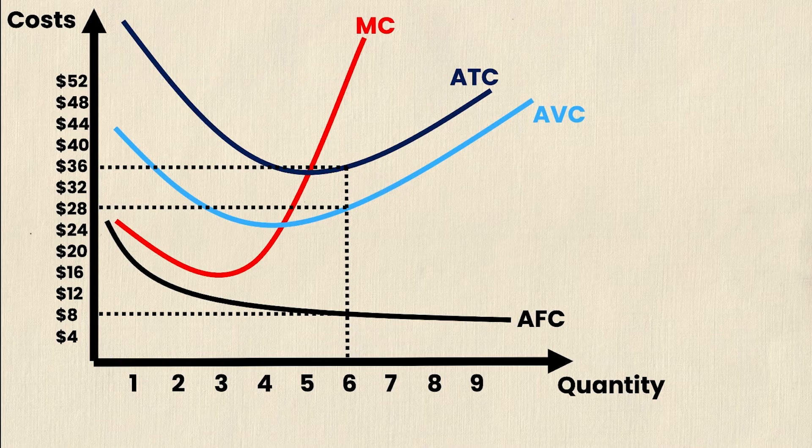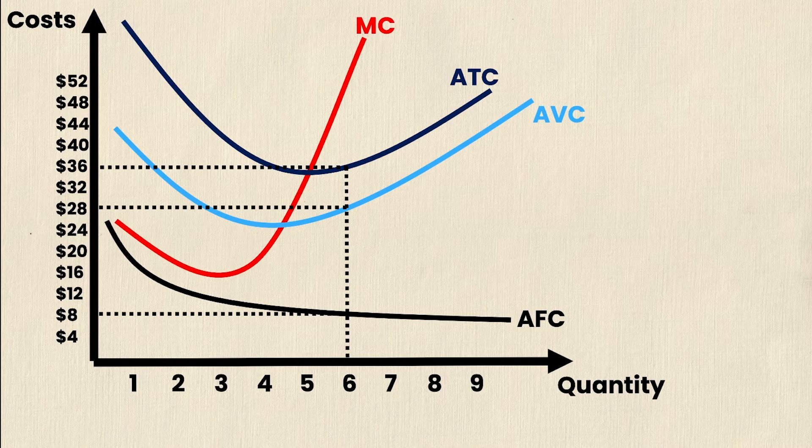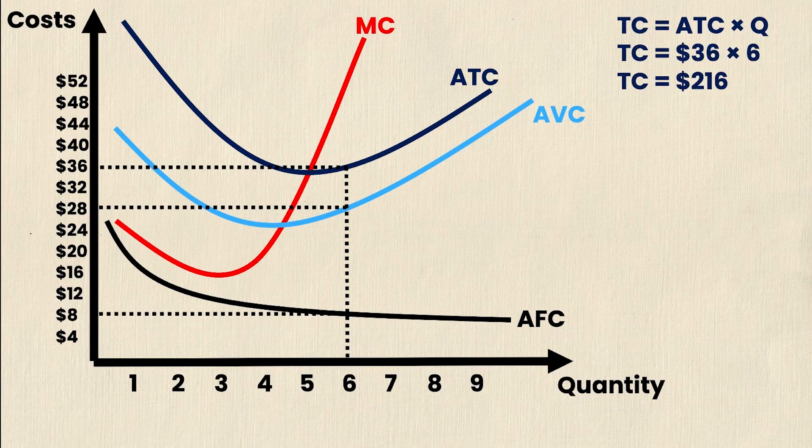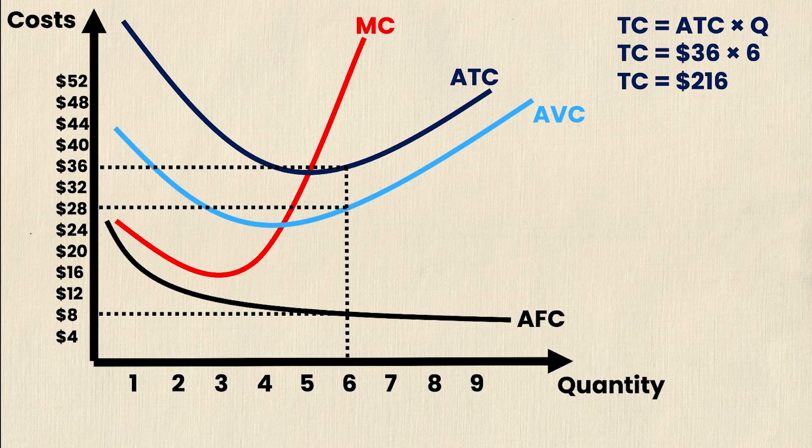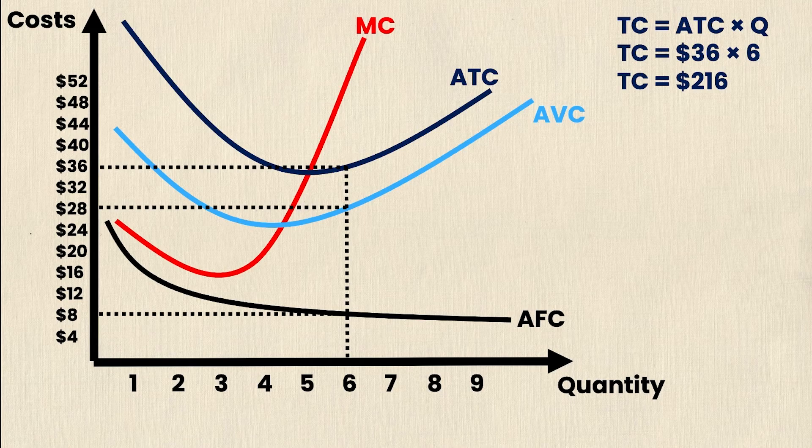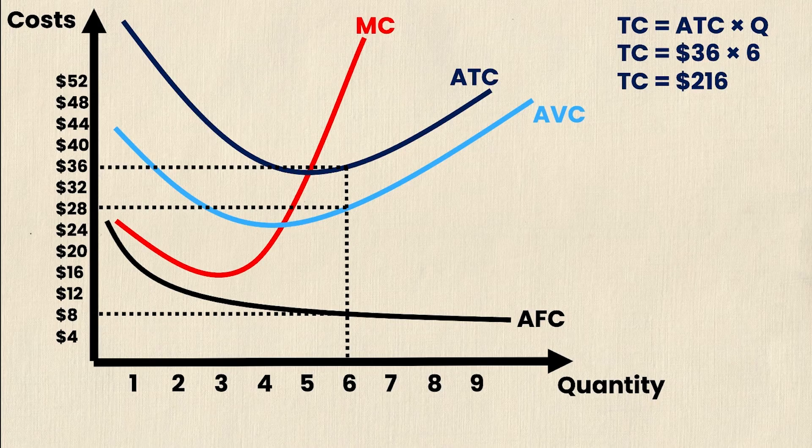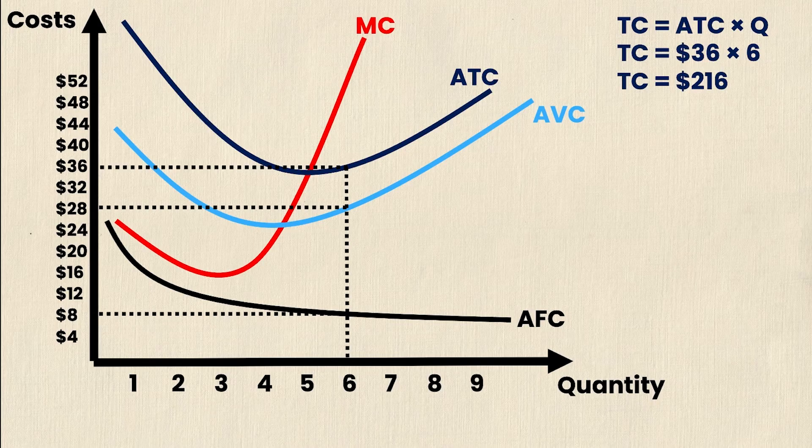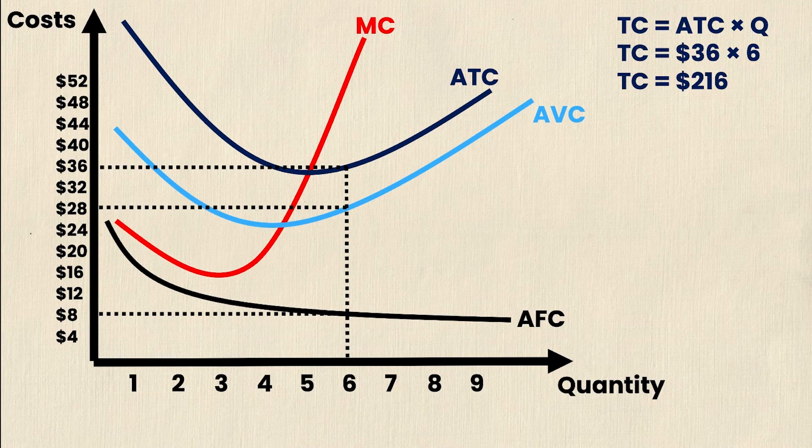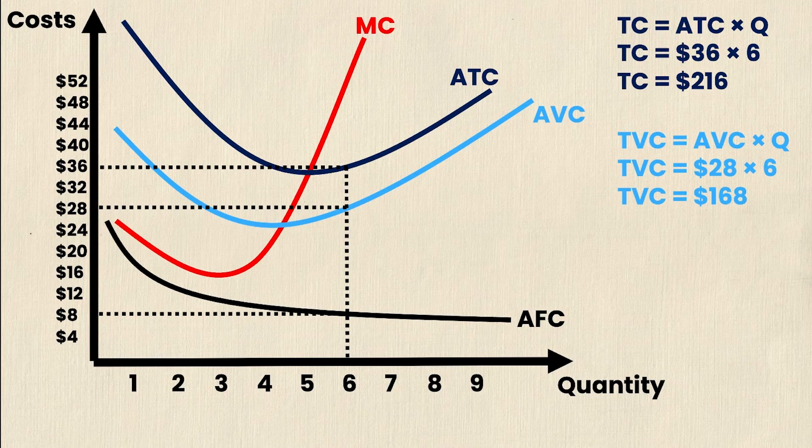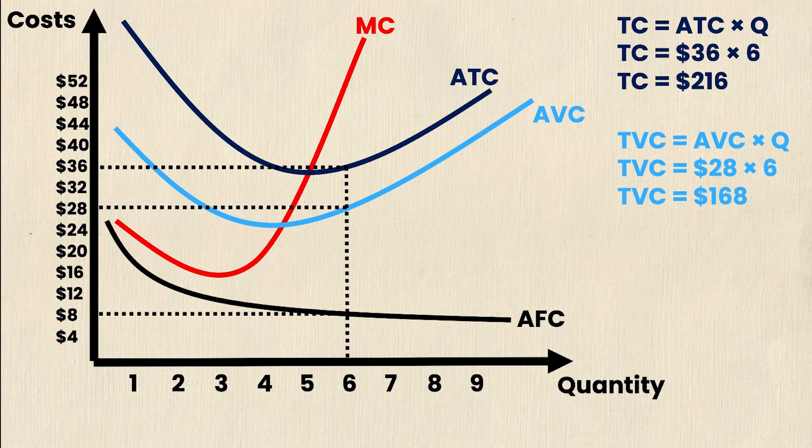As promised, we'll also explore the final thing that you can do with these curves, and that is interpret what the total costs are just by looking at the averages. So recall that the formula for average total cost is the total cost divided by Q. Well, then if we reverse that equation, the total cost is equal to the average total cost times Q. And in this case, the total cost would be equal to $36 times 6, which is just the average total cost times quantity, and that's equal to $216. So we can actually calculate the total cost at six units just by multiplying the ATC times Q. So now we know that the total cost of six units of output is $216. But we want to know how much of that is variable cost and how much of that is fixed cost. So we can use the same types of formulas to solve for that. Recall that total variable cost is equal to average variable cost times quantity. At a quantity of six, the average variable cost is $28. And 28 times six is 168.